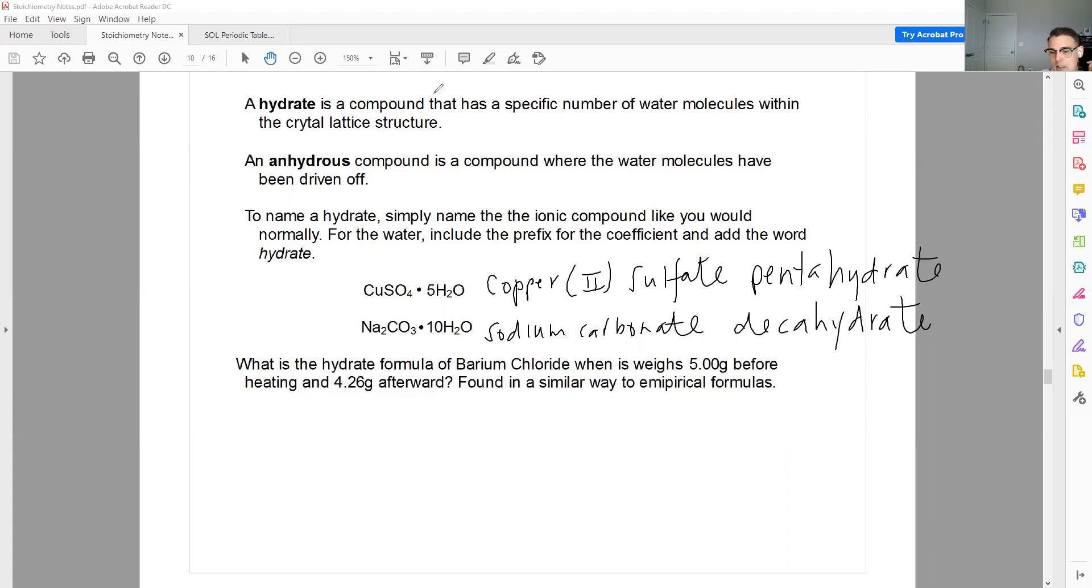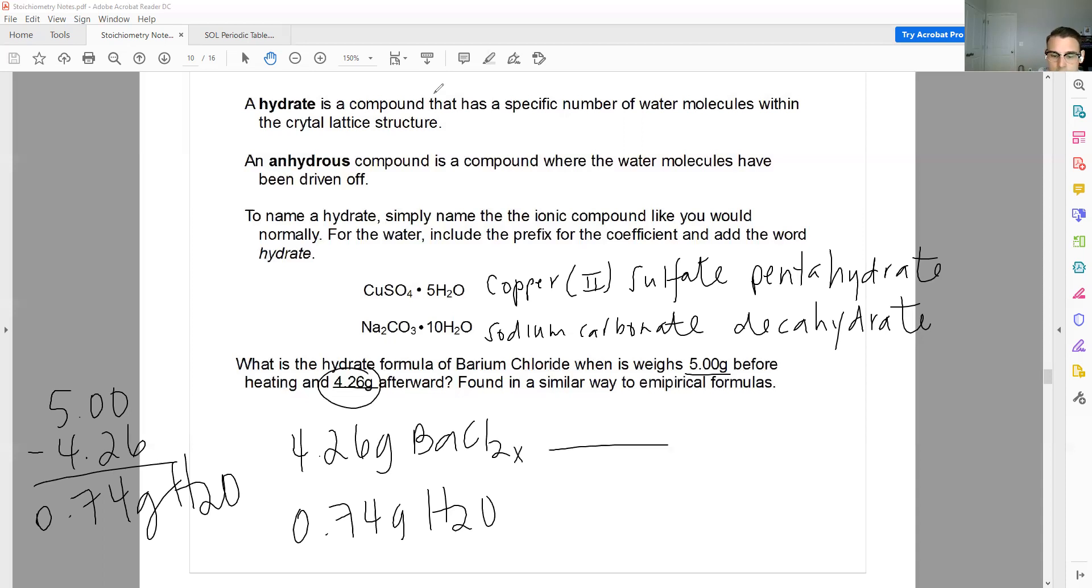What is the hydrate formula of barium chloride when it weighs 5 grams before heating and 4.26 grams afterward? And like I told you earlier, it's found in a very similar way to the empirical formulas. So first off, if I know I have this much before and this much after, what is the difference? So that's going to be 5.00 minus 4.26, which gives me 0.74 grams. What is that? That's the water that's been driven off. Okay, that's the water. So now what we do is we take the mass of the anhydrous, barium chloride, the mass of the water, and then we follow our steps for an empirical formula.